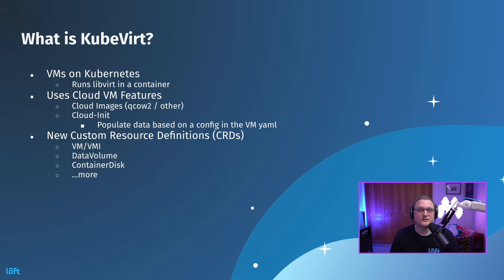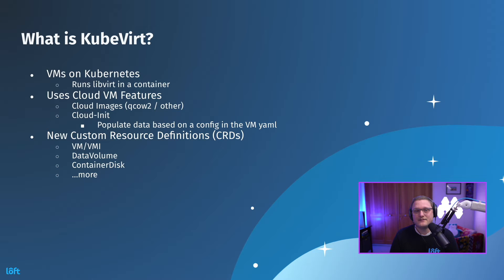What does KubeVirt install? Some new custom resource definitions — CRDs — like VM, VMI, data volume, and container disk. VM versus VMI: a virtual machine versus a virtual machine instance. One will create the VM but not start it; the other can be set to automatically start. For data volumes, that'll contain information about the cloud images you're using and where to store or expand those into a disk running in Kubernetes — better for production than ephemeral. Container disk is more ephemeral: it's a cloud image expanded into a container so you can deploy it from a registry, but not recommended for production workloads needing long-lived storage.